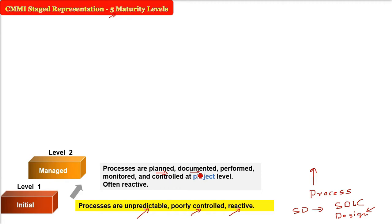At level two, processes are planned and properly documented. Whatever is written in the document is performed, monitored, reviewed, and controlled. If something is not going according to plan, it's controlled. However, all this at the managed level is only at the project level, not organizational level. This is very important. Managed level is also often reactive.